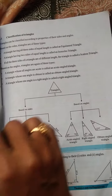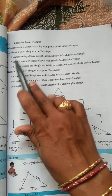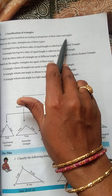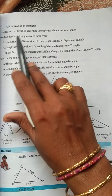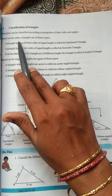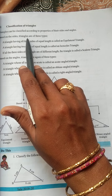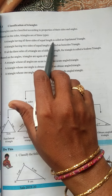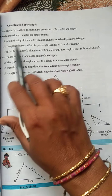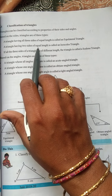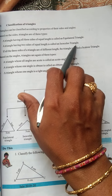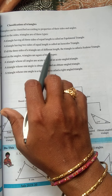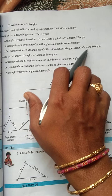Next, classification of triangles. A triangle can be classified according to properties of their sides and angles. Based on the sides, triangles are of three types. A triangle having all three sides of equal length is called an equilateral triangle. A triangle having two sides of equal length is called an isosceles triangle. If all three sides of a triangle are of different length, it is called a scalene triangle.